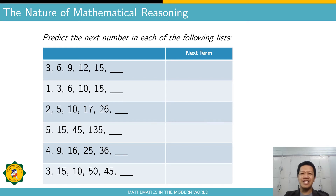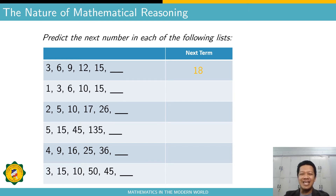Let us now check your answers. For number one: 3, 6, 9, 12, 15 — what's the next term? It is 18. That is by adding three. The rule is: add three to the term to get the next term.